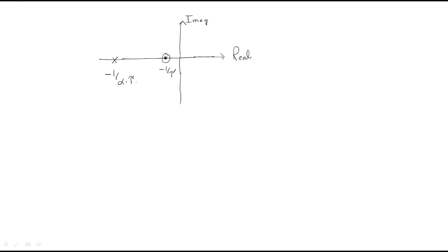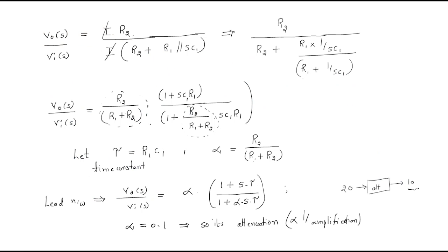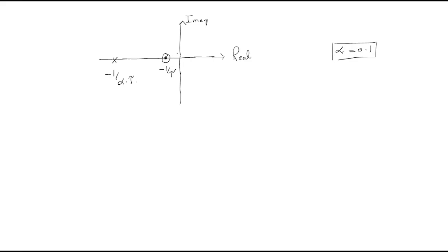On the pole-zero plot, the zero at −1/τ is near the imaginary axis, and the pole at −1/(α·τ) is farther along the real axis. Since α is small (≈ 0.1), the pole is far from the imaginary axis. The root locus always travels from pole to zero. This is the lead compensator — its transfer function, pole-zero configuration, and properties.